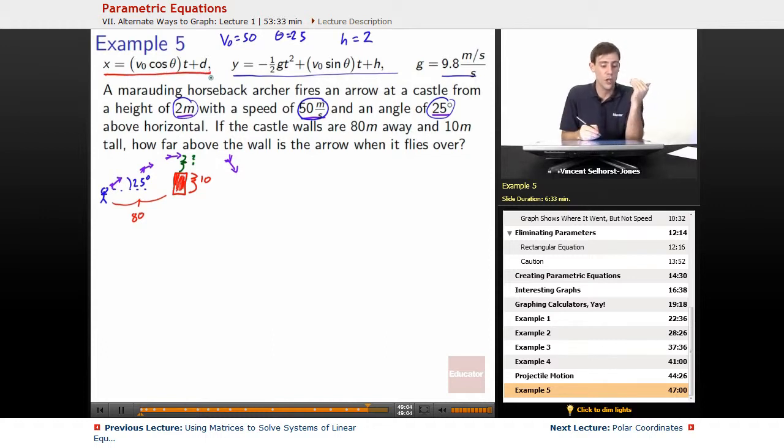At what point is it at the walls? So X equals V0 cosine theta T plus D. We know what V0 is, it was 50. We know what theta is, it's 25. We know how far they are, so we know what our X value is going to be, it's 80 meters away. What is our D? Let's just say that the horseback rider, where he starts, is 0. He starts at 0 horizontally. So the castle walls are at 80, he starts at 0 in terms of horizontal X location.